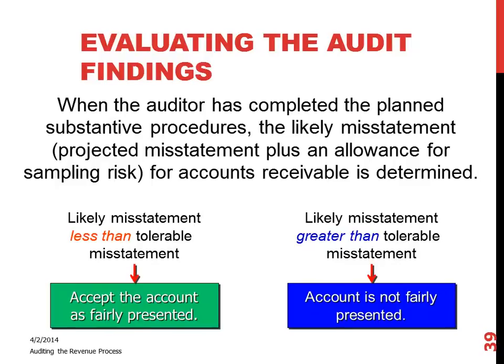The auditor has a responsibility to report these types of things to the audit committee, especially if they're unable to resolve the issues with the client. There is a standard — I can't remember the number off the top of my head — that deals with the auditor's responsibilities for communications with the audit committee and covers these types of situations. Ultimately, management is responsible for issuing the financial statements. If management and the audit committee are not willing to book the adjustment, the auditor can issue an adverse opinion or withdraw from the engagement.